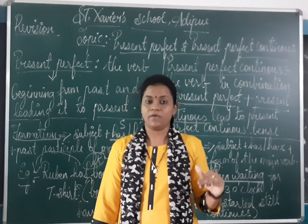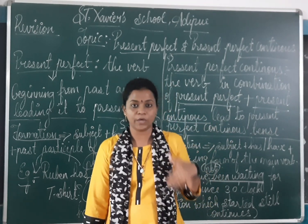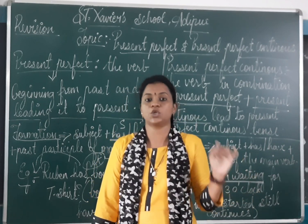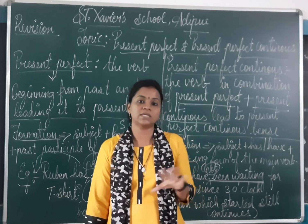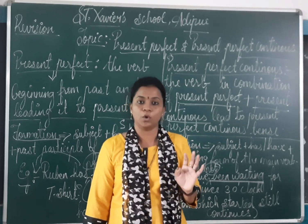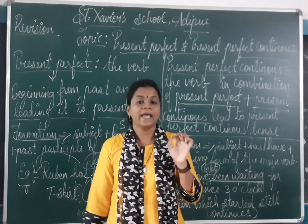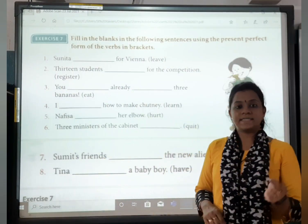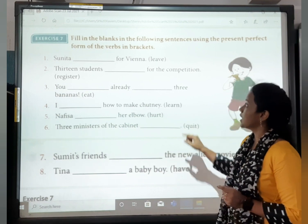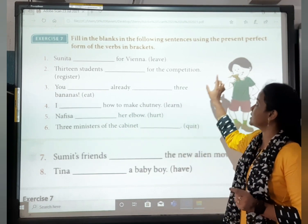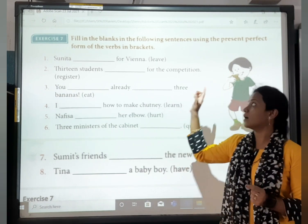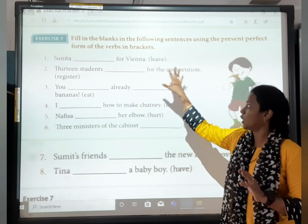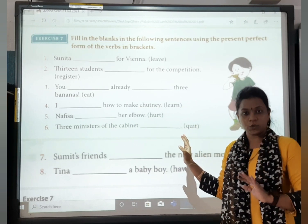I will post the exercises after this video only. So you have to first carefully listen to my explanation of the exercise, and then only write it down from the video in your notebook. So let's move to our exercise related to these two topics, from 7 to 12. Exercise 7: fill in the blanks in the following sentences using the present perfect form of the verbs in brackets.